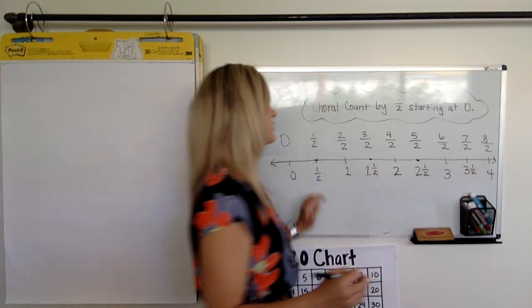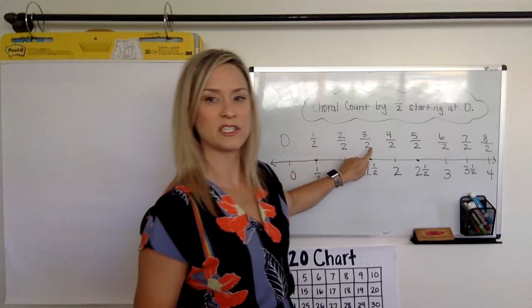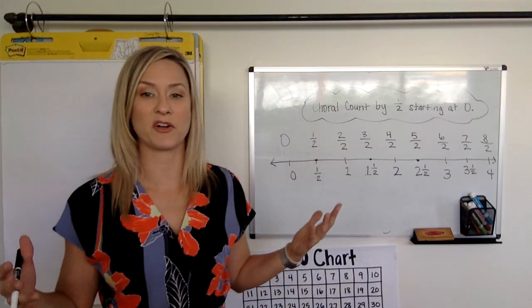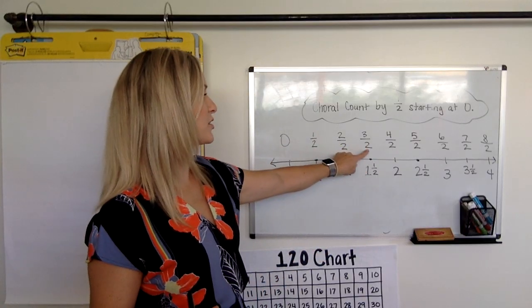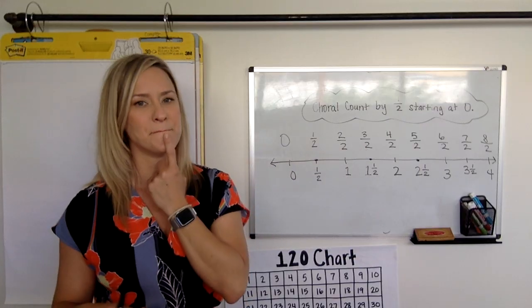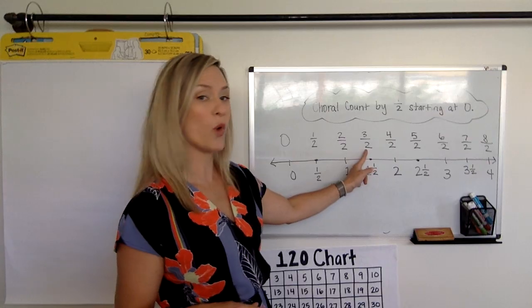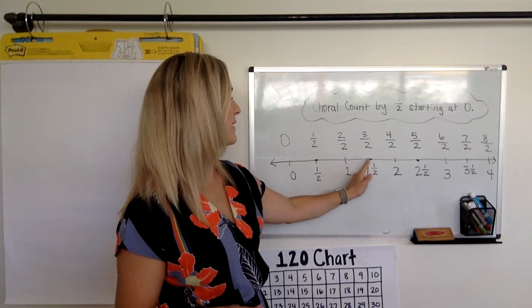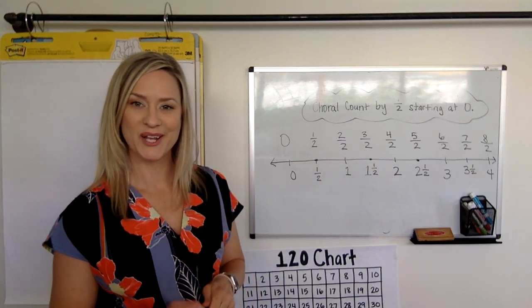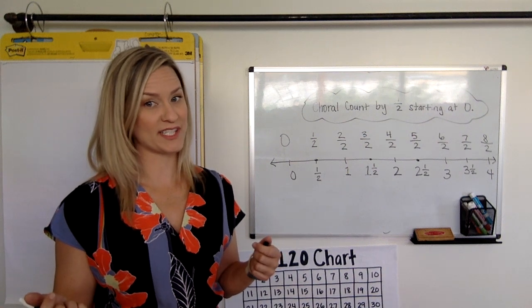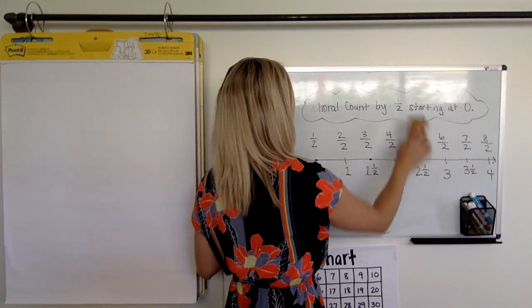So you can place improper fractions on a number line just by thinking about a choral count. So when you hear three halves, you could say, hmm, I know two halves as a whole, and this one is just one more half. So that would make it one and one half. All right, shall we check it out with fours? All right, let's check it out with fours.